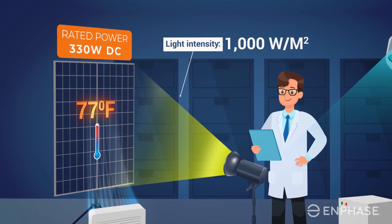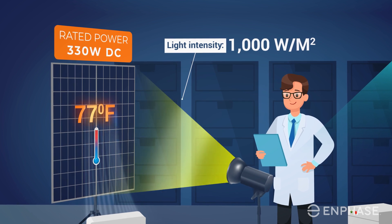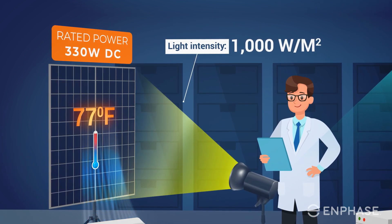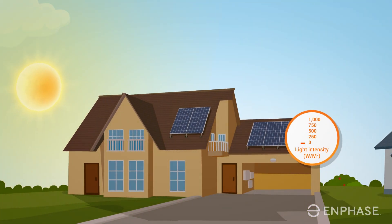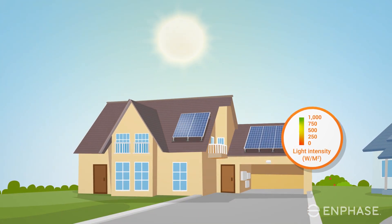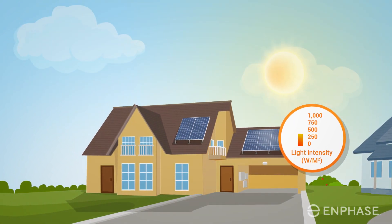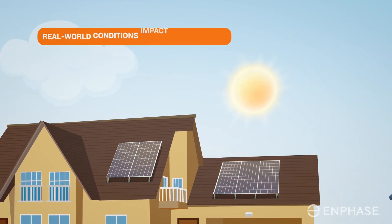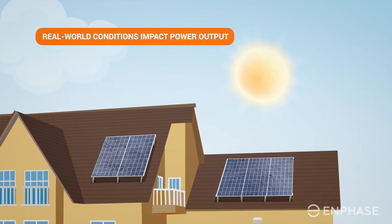A solar panel's DC rated power is determined in a favorable and highly controlled laboratory setting known as standard test conditions, which consists of an intense flash of light on an artificially cooled solar panel. In the real world, the power output is relative to the intensity and angle of the sunlight, which varies greatly as the sun rises and moves across the sky, as well as with the seasons of the year. When the sun is strong, the panel will also get very warm, which reduces the potential power output. The panels will also naturally get slightly soiled, which will block some of the sunlight.